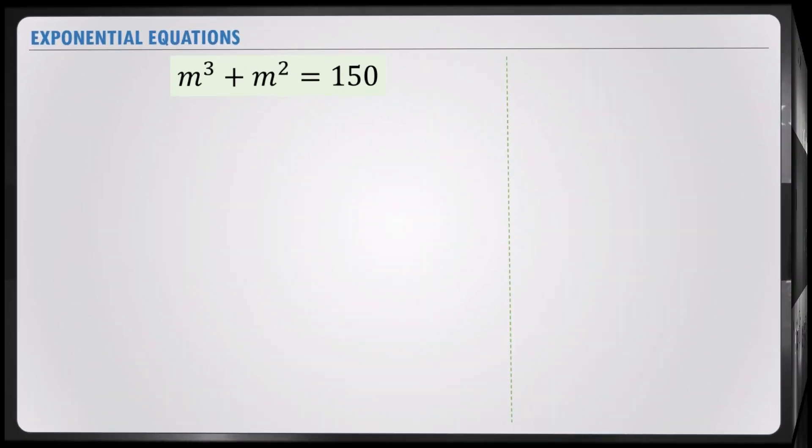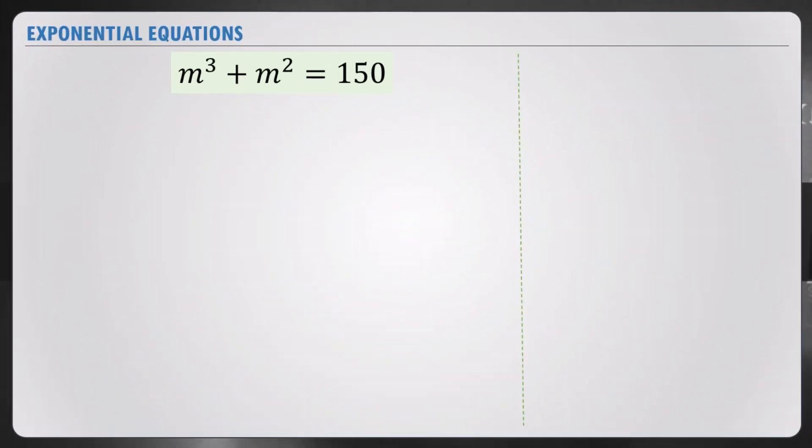We have m to the power of 3 plus m squared is equal to 150. This equation has highest power 3, which means there are three solutions.